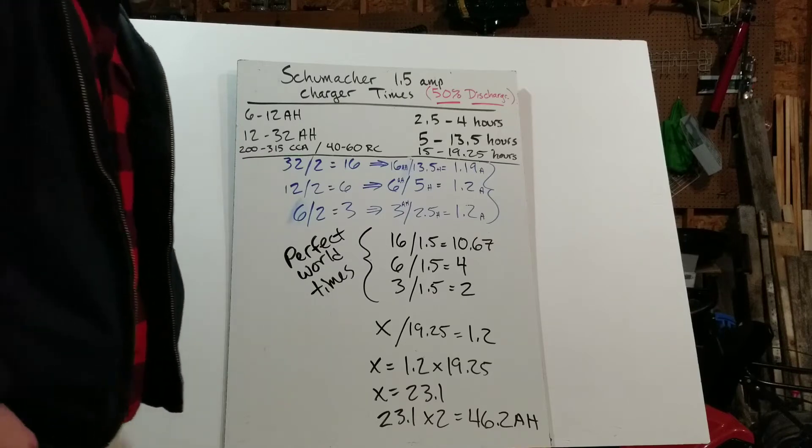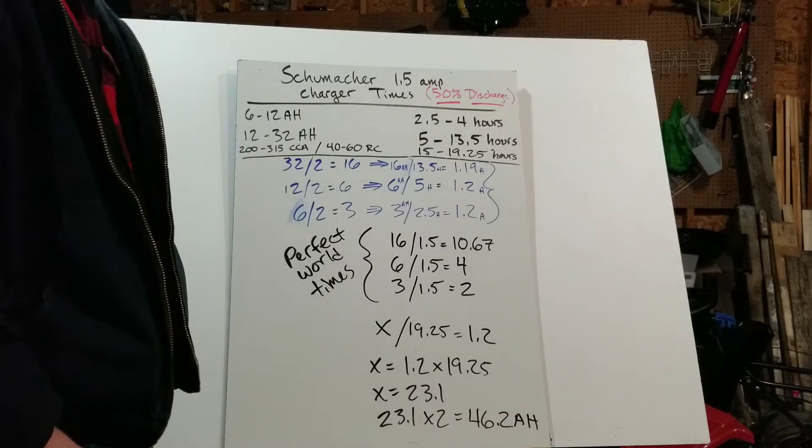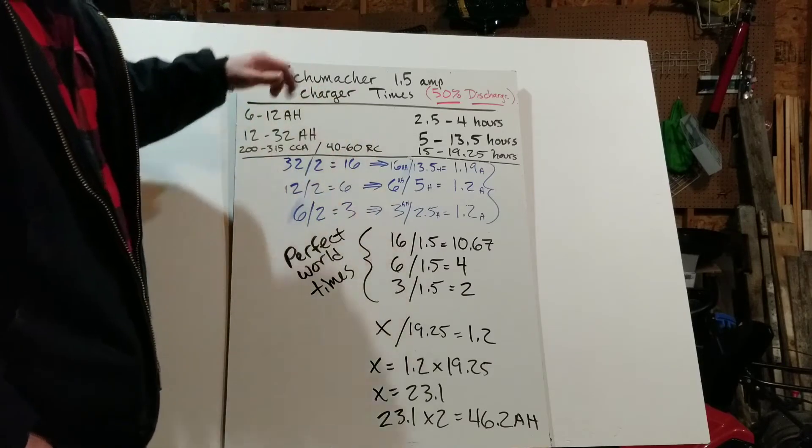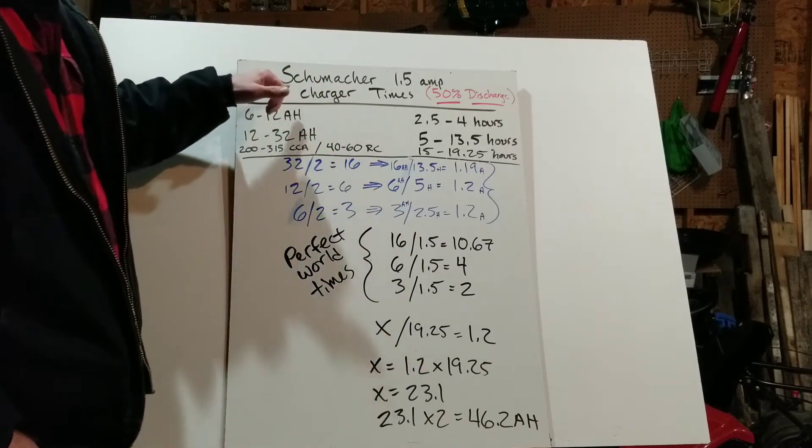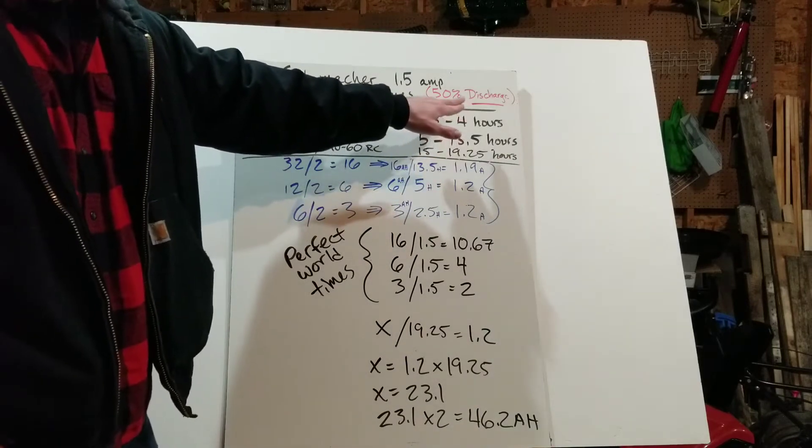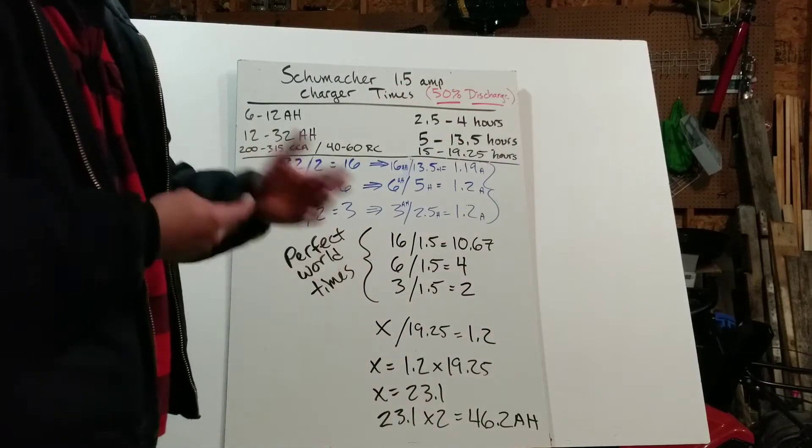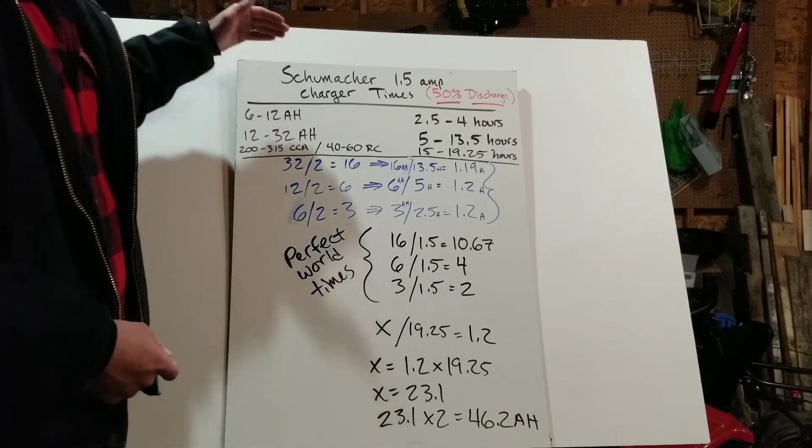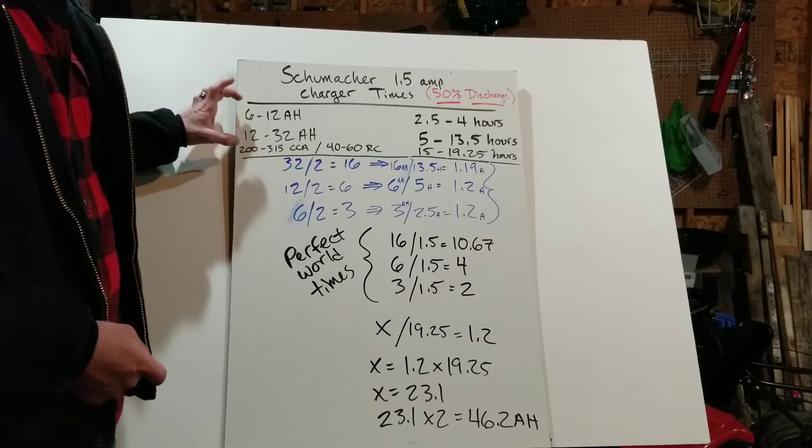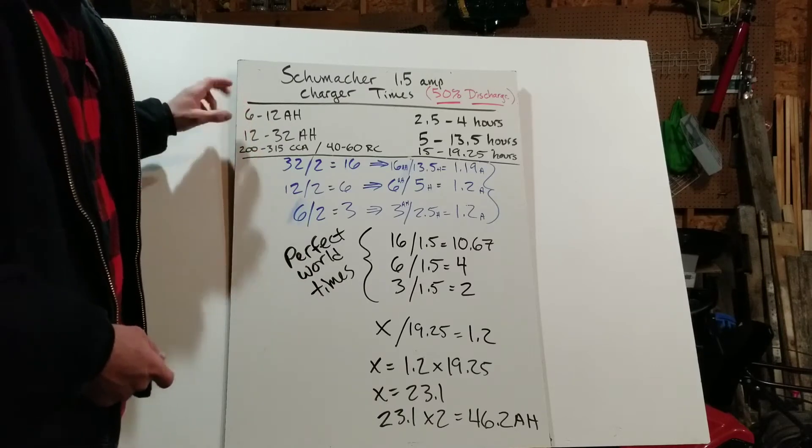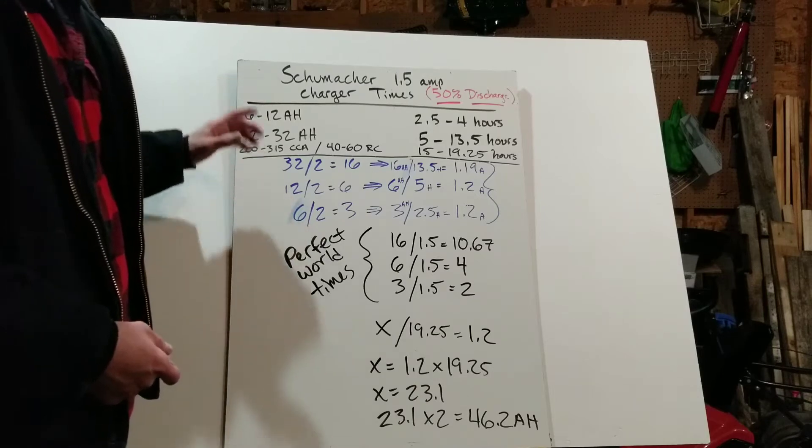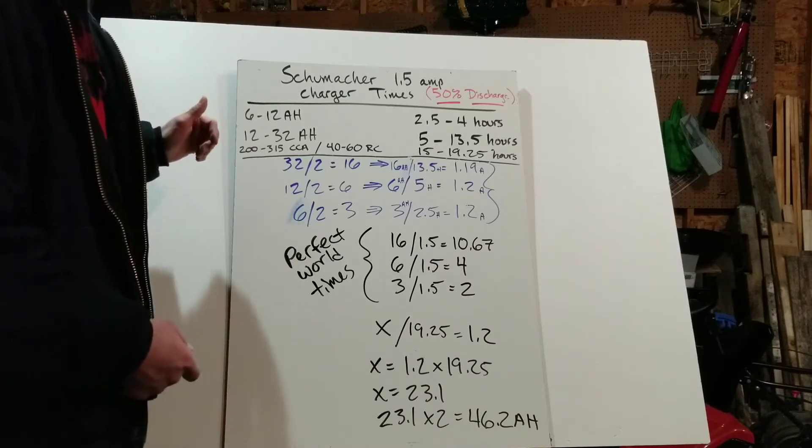Okay guys, jumping into the math. If you go to my website, I have the Schumacher 1.5 amp battery charger charging times, and these are rated for a 50% discharge. So that's assuming that the battery is half dead or half full, whether or not you want to be a pessimist or an optimist. And then it'll give the charging times based on the capacity of the battery. This is just a short excerpt from it. It's a much longer list, and you can see that on my article below in the description.